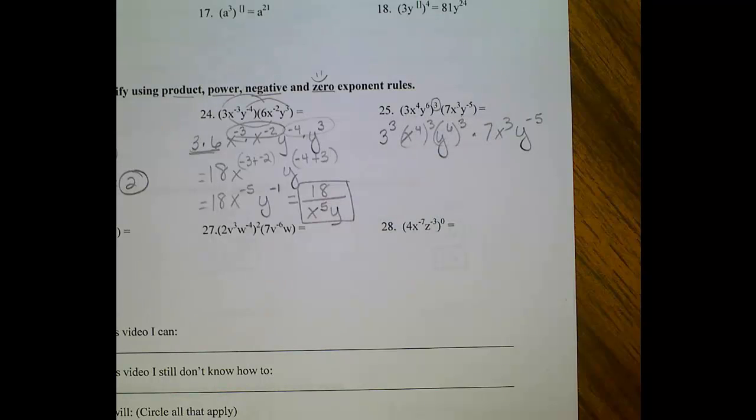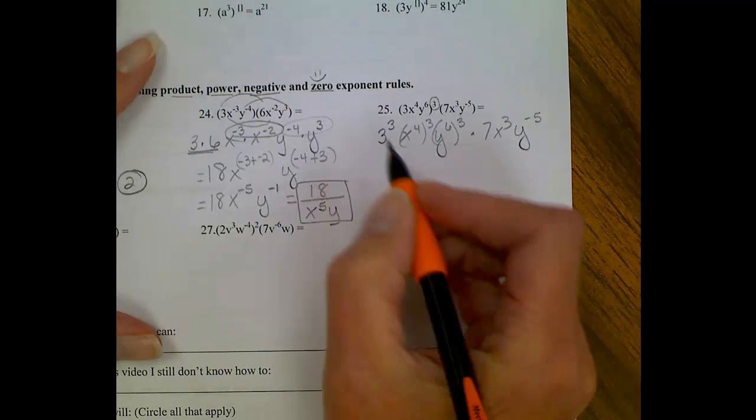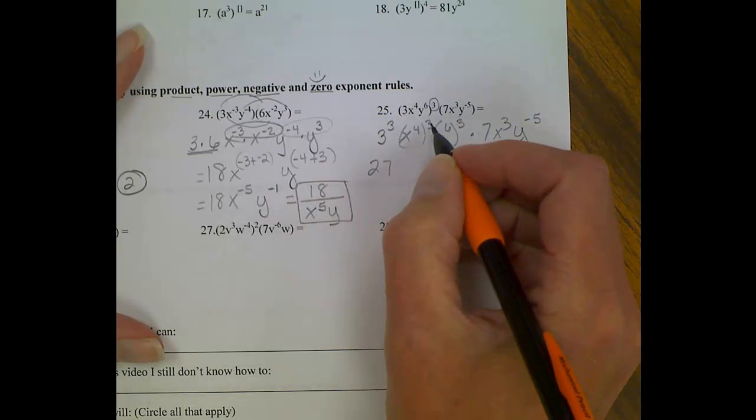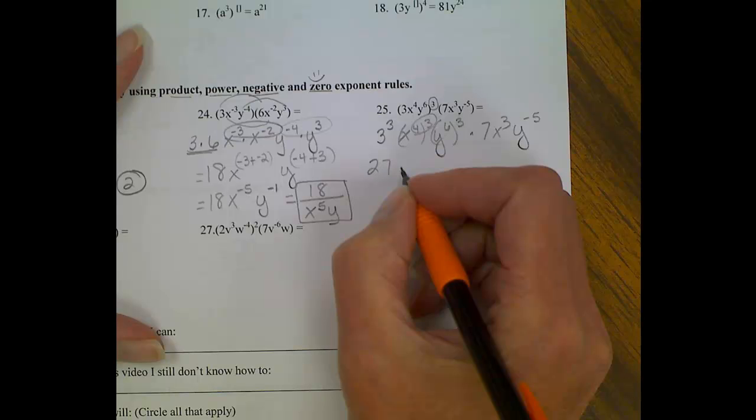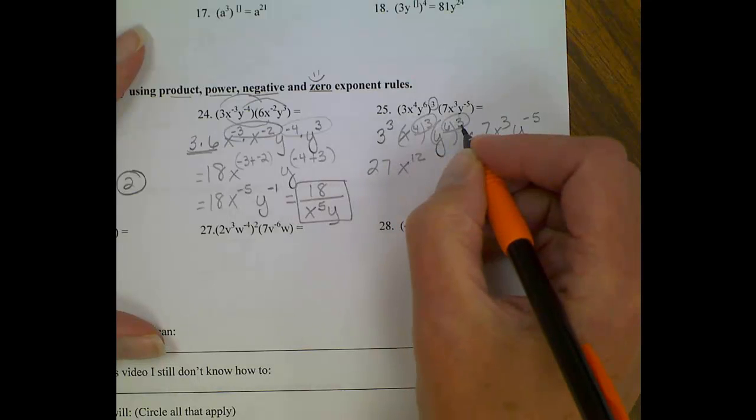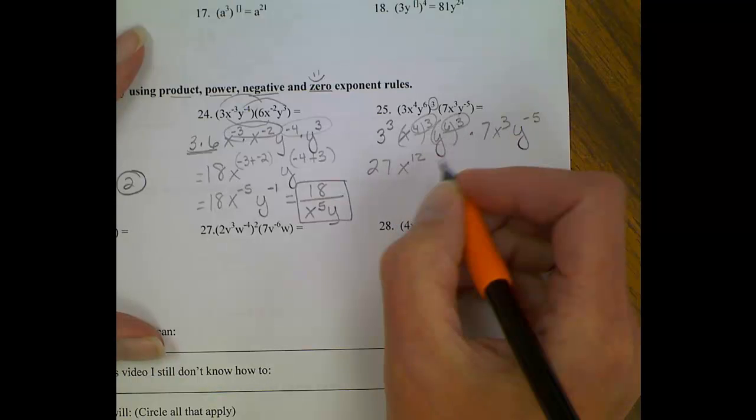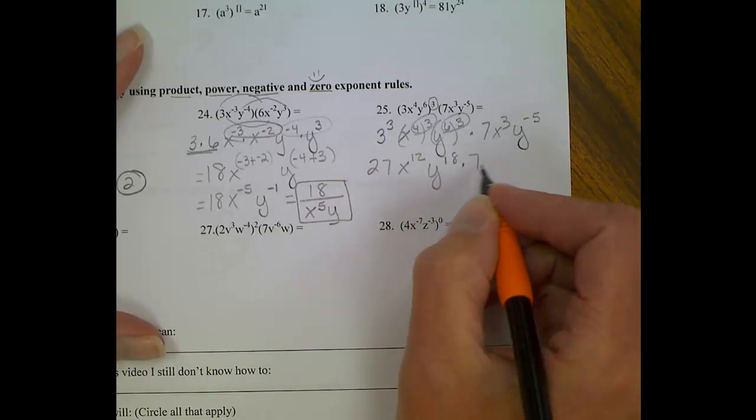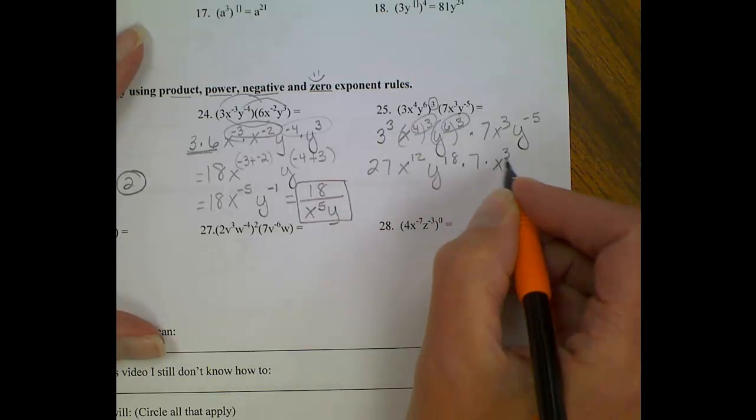Okay, three to the third, when we evaluate, gives us twenty-seven. x to the fourth to the third, we are multiplying exponents, we get x to the twelfth. And y to the sixth to the third, again, we're multiplying exponents, and six times three will give us eighteen, times seven, times x to the third, times y to the negative five.